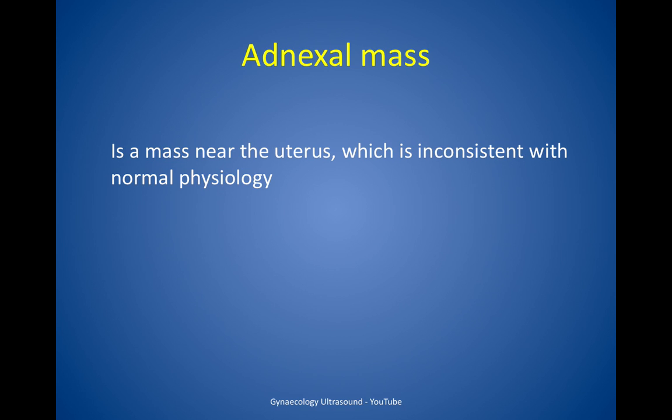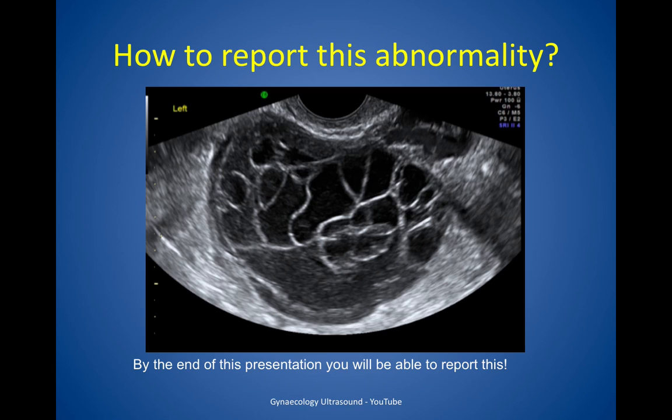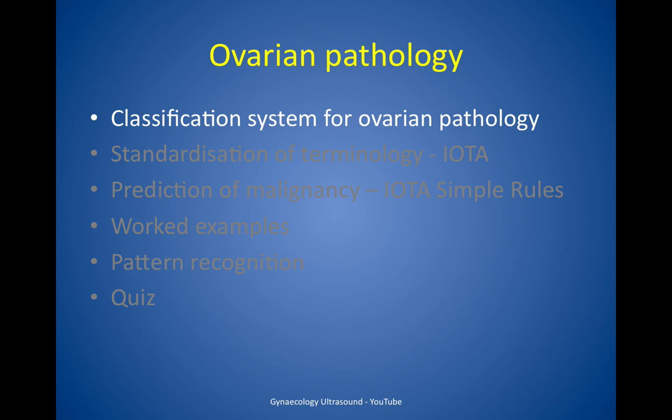An adnexal mass is a mass near the uterus which is inconsistent with normal physiology. How you report on this mass is very important, whether it's benign or malignant. Previously reports would simply say whether it's a simple cyst or a complex cyst, but I think we can do better. By the end of this presentation you will be able to report this.